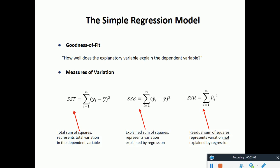Looking at this equation on the board: it is the summation from i equals 1 to n of yi minus y-bar squared. In this case, yi is the actual value of yi from the sample.